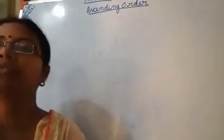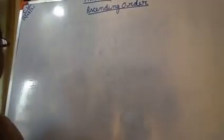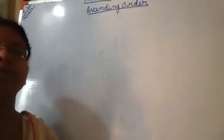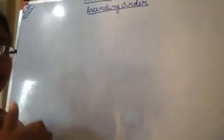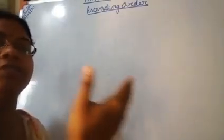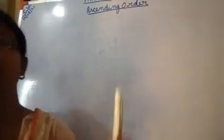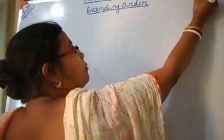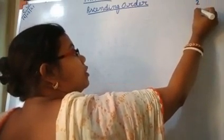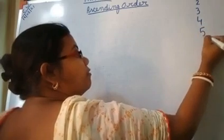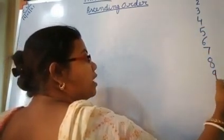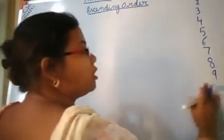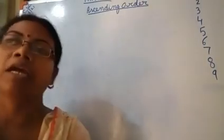Ascending order means smaller number to bigger number. As we are going to forward counting, we are doing smaller number to bigger number. Always remember: forward counting means smaller number to bigger number, and backward means bigger number to smaller number — just opposite. So ascending order means smaller number to bigger number. Children, I will make you write here: two, three, four, five, six, seven, eight, nine — up to nine only.